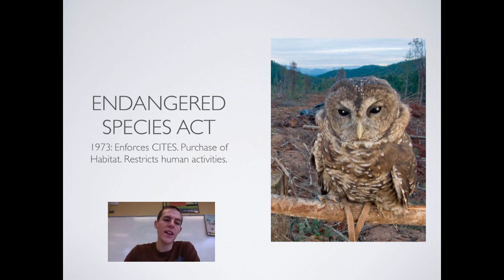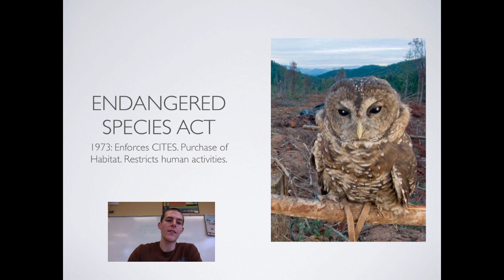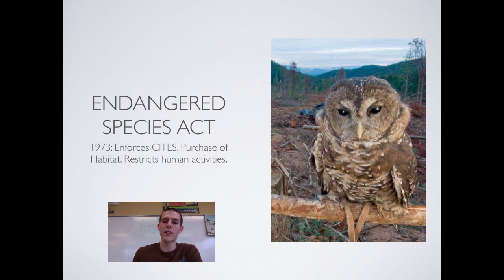The Endangered Species Act is often controversial because it restricts human activities. A lot of times developments have to put together an EIS — an environmental impact statement. When they do that, if it is found that endangered species live in an area, the developer will often not be allowed to buy or build on that land because it would further threaten the species and go against the Endangered Species Act. So conservation groups and development groups are often at odds: the conservation group says we need to protect these animals, and the development group says we need jobs and the right to develop this land for human use. So the Endangered Species Act gets in the way of development sometimes and is occasionally controversial.